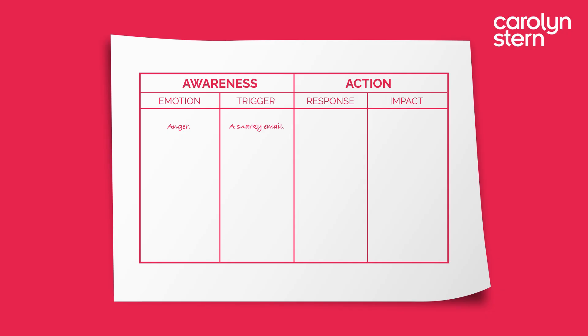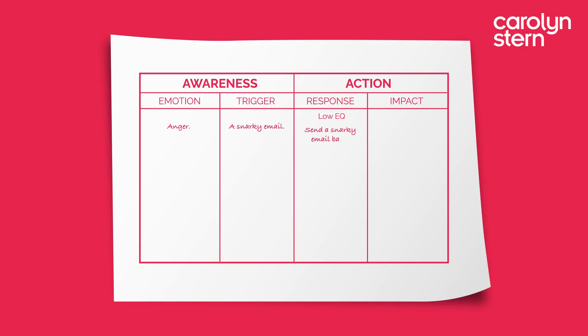Under the Response column, write out a low EQ response. A low EQ response would be what you did — you sent a snarky email back — so write that out under the Response column. Then take a moment to think about the impact of that low EQ response.